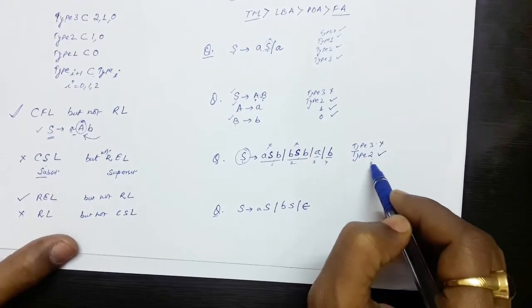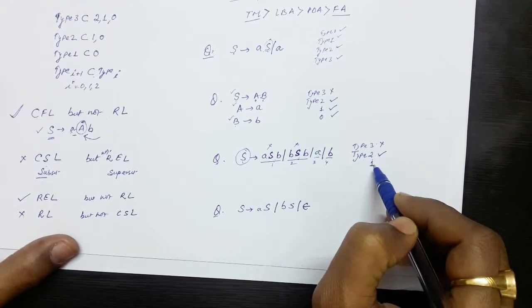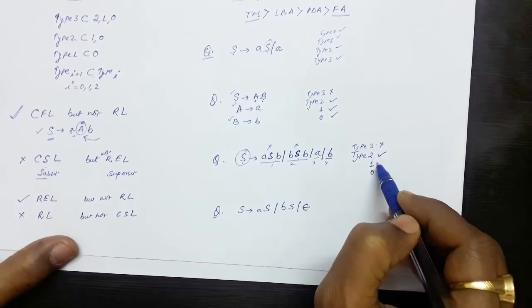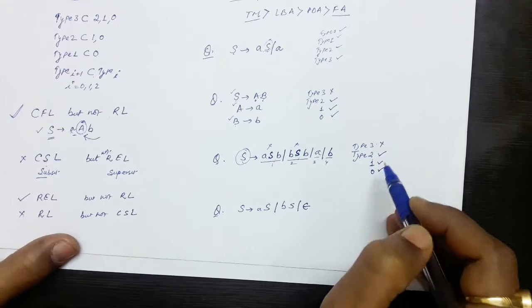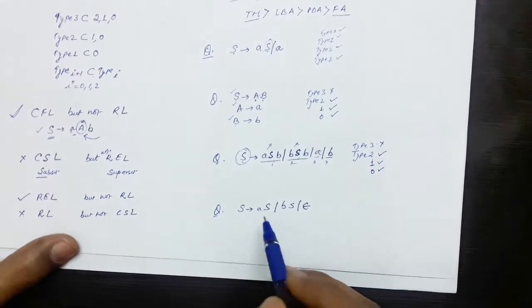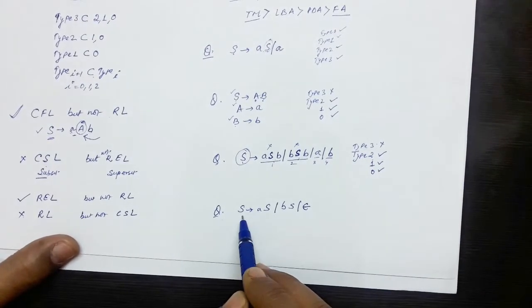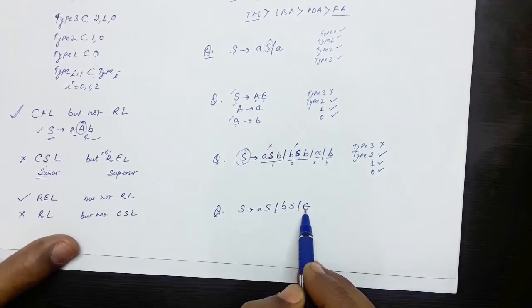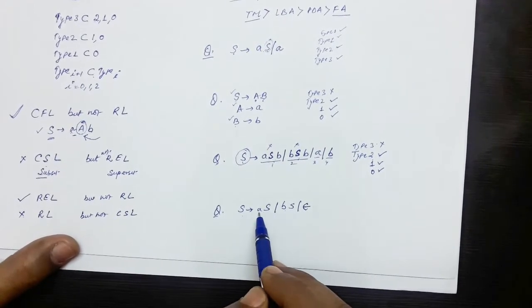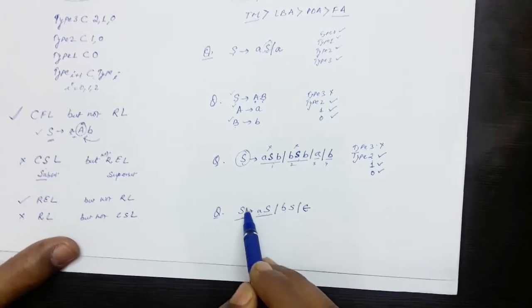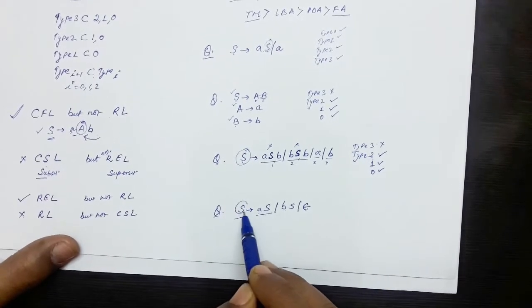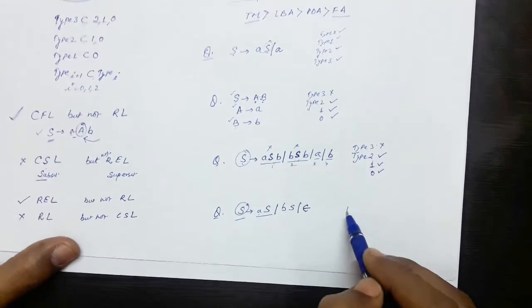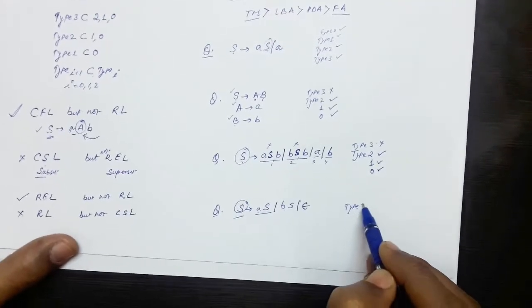If it is Type 2, obviously it is Type 1, and if it is Type 1, it is obviously Type 0. Now let's take another question: S produces aSb, Sb, and epsilon. For this grammar, the left hand side has only one symbol, so it is either Type 2 or Type 3. Type 2 is declared.